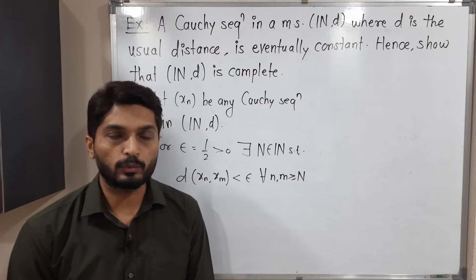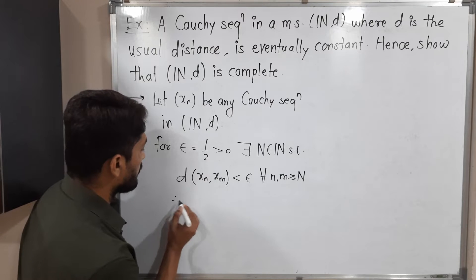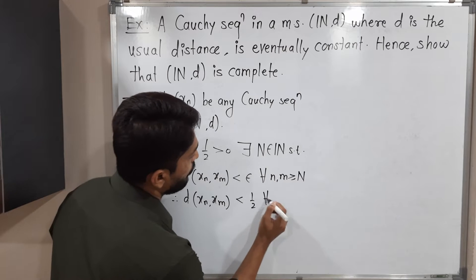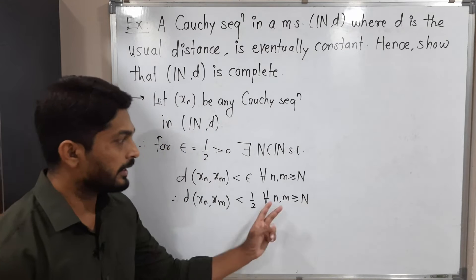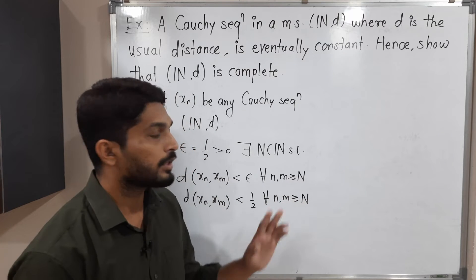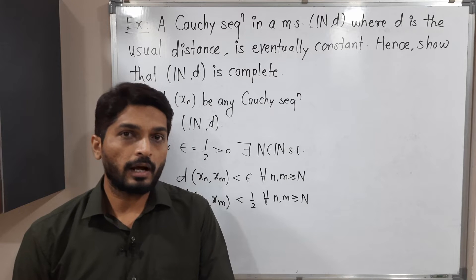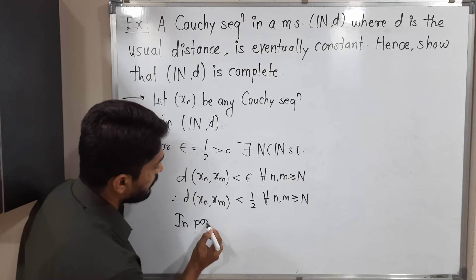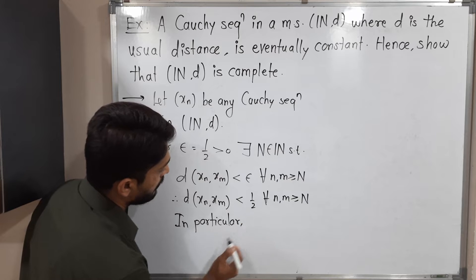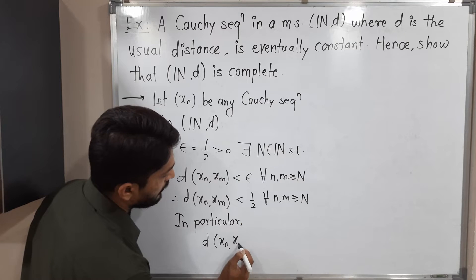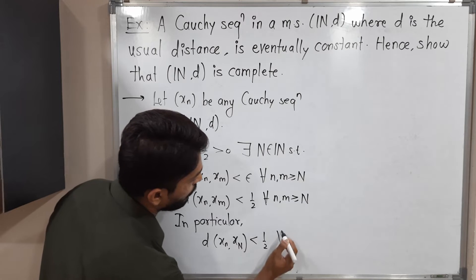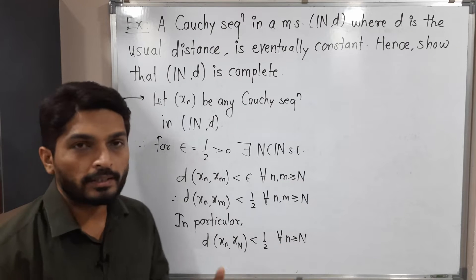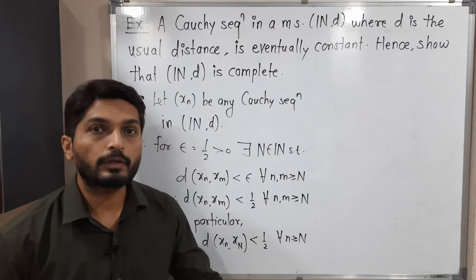But here I have chosen epsilon equal to 1 by 2. So putting the value of epsilon, D of Xn, Xm less than half for all n, m greater than or equal to capital N. Here n and m are any natural numbers which are greater than capital N. So here I will fix m equal to capital N. In particular, D of Xn, X capital N less than half for all n greater than or equal to capital N.